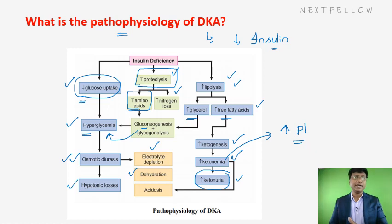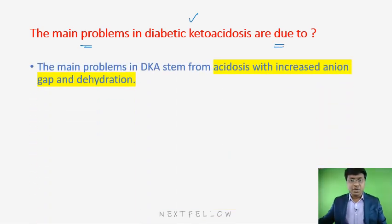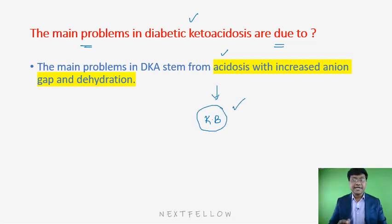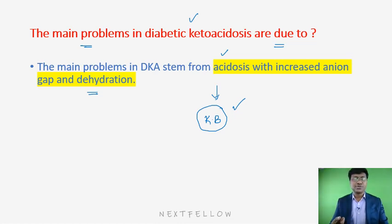The basic pathophysiology of DKA: decreased insulin leads to glucose not being utilized; alternatively there is proteolysis and lipolysis. The main problems in diabetic ketoacidosis are due to acidosis — because the ketone bodies synthesized are acidic in nature — and dehydration, because hyperglycemia causes osmotic diuresis and fluid loss.